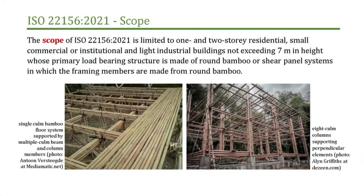Now we move on to the structural standards. I have material properties and hopefully a way to grade bamboo to identify what I'm looking at — and now I want to build something with it. The first thing you do with a code is open it and check the scope. This is a limited scope document: we talk about one- and two-story buildings not exceeding seven meters in height. So today, this is essentially a residential document. It is limited, but the idea is we will be able to expand this as we go on.